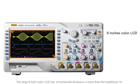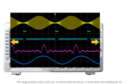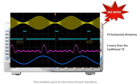The large 9-inch color LCD has 14 horizontal divisions, 4 more than the traditional 10. This enables users to view more of each waveform.